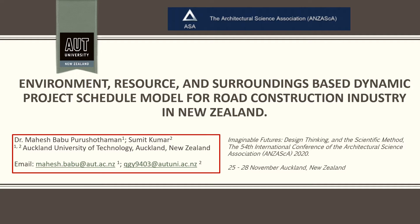I would like to discuss the presentation outline. This presentation is divided into six sections. Section one covers the research background with problem statement. Section two covers the literature review on scheduling techniques. Section three covers the research methodology framework. Section four is based on discussion of findings around the dynamic model. Section five covers the research conclusion, and the last section covers the research limitation and future work scope.